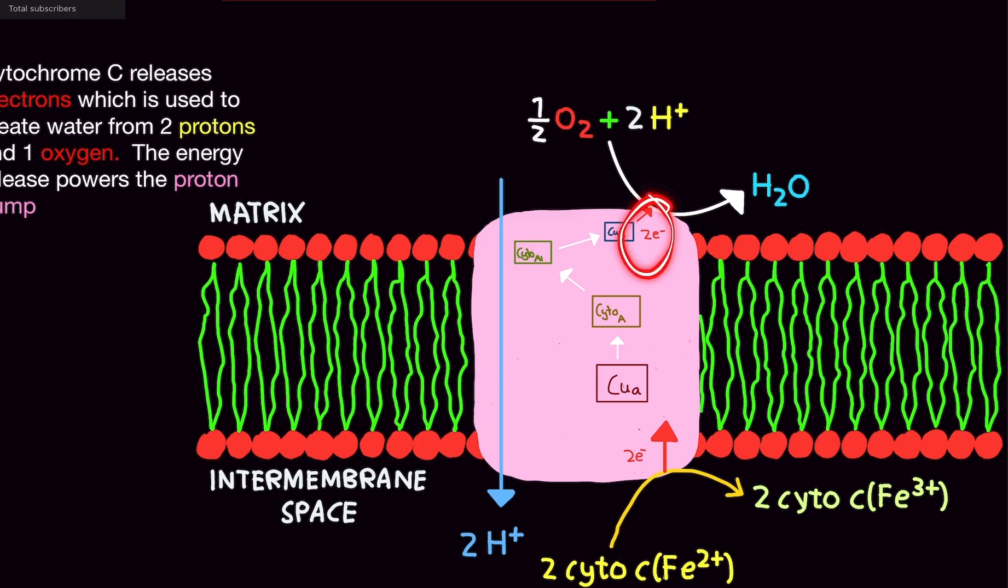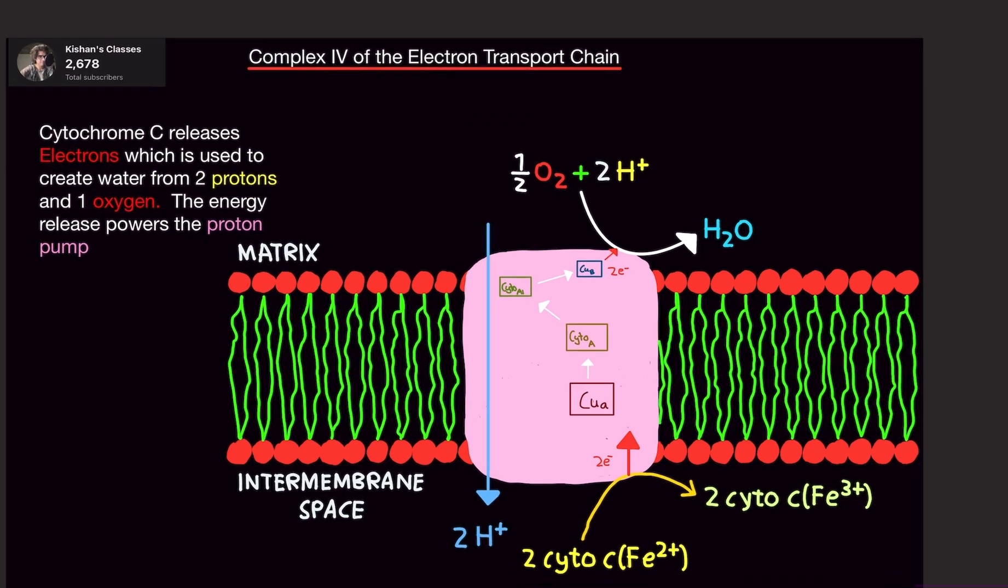And then the two electrons that we released are involved to make water from this one-half O2, or technically one oxygen atom, and two protons. That's it. And that is Complex IV.